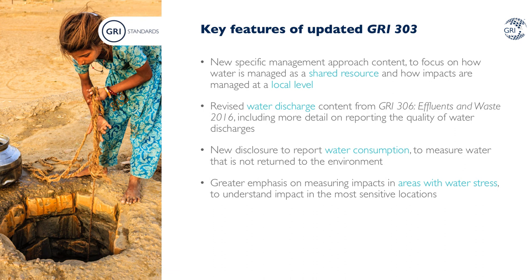The amount of water withdrawn and consumed by an organization and the quality of its discharges can impact the functioning of ecosystems. Consequently, these impacts can have wider social and economic consequences for local communities. As such, the management approach section has been significantly expanded to capture how organizations manage water as a shared resource and how they manage impacts at a local level. Content on discharge from the GRI 306 Effluence and Waste Standard has been incorporated into the GRI 303 Water and Effluence Standard to help provide the full picture of water impacts from withdrawal to discharge and consumption.